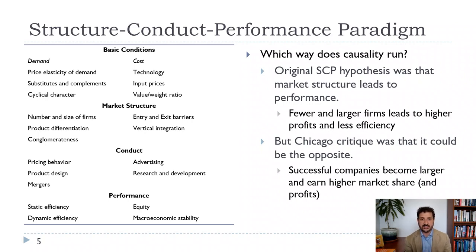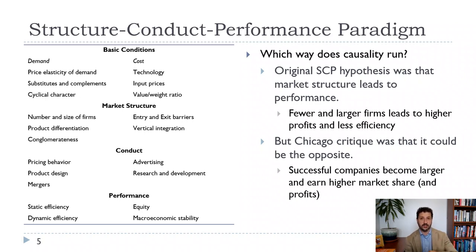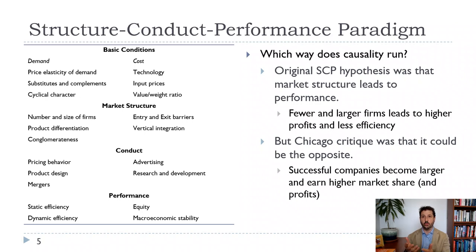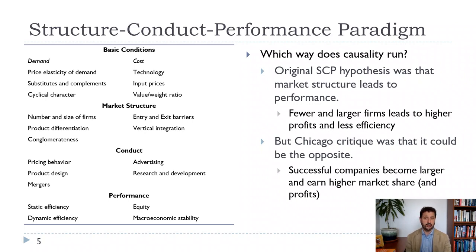Then we want to talk about market structure — the number and size of firms. We'll talk about a Cournot model where we can have two firms or ten firms in an oligopoly and see how that affects outcomes, and the difference between a Cournot and Bertrand model. We want to think about product differentiation — not only on a vertical dimension with higher and lower quality products, but also on a horizontal dimension where quality might be similar but different product attributes are more attractive to different consumers. We also think about entry and exit barriers, whether it's easy to enter a market, and then integration — both horizontal and vertical integration.